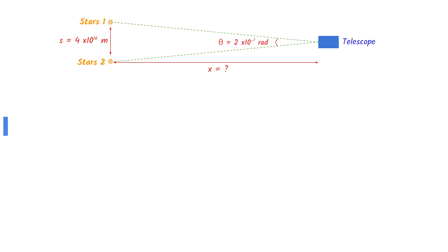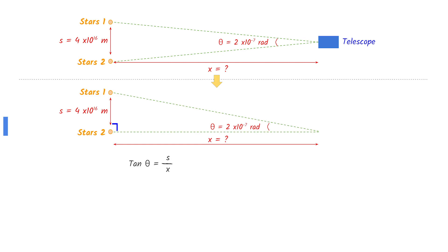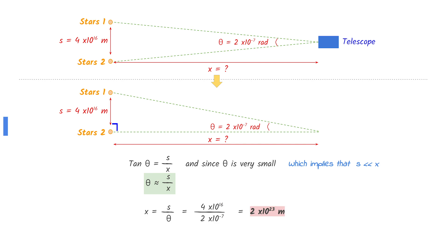The angle between the two stars can be taken as 2 times 10 to the power of minus 7 radians, since that is the minimum angle of separation for the telescope to resolve the image. Since the angle is very small, we can draw the diagram as a right-angled triangle and use trigonometry to write down the equation connecting the distances and the angle. Additionally, tan theta can be approximated to theta since the angle is very small. Rearrange to make x the subject and put in the values to find your answer.